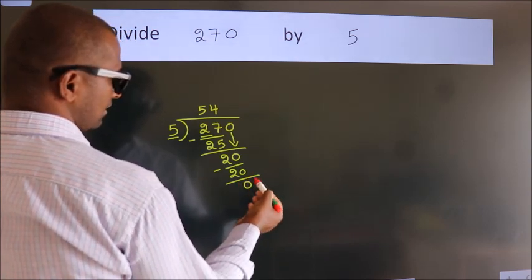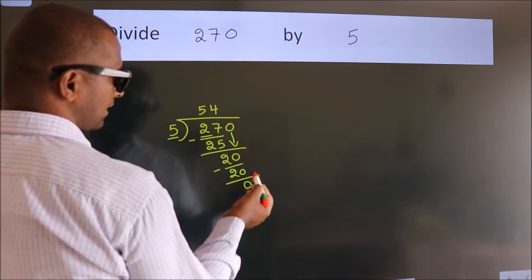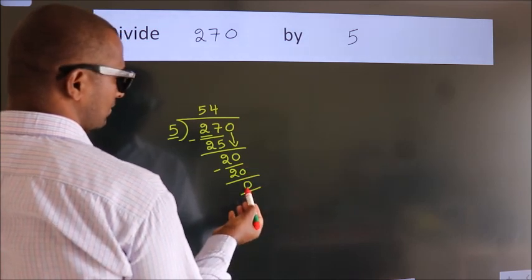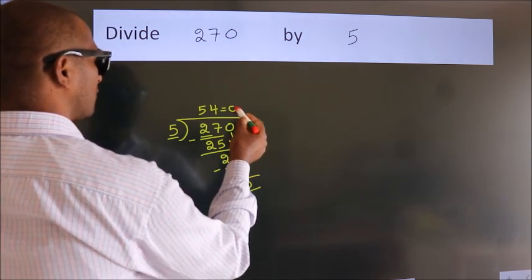After this, no more numbers to bring it down. And we got remainder 0. So this is our quotient.